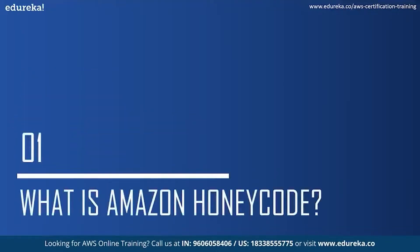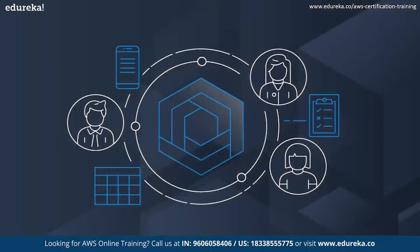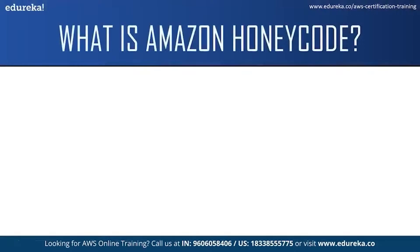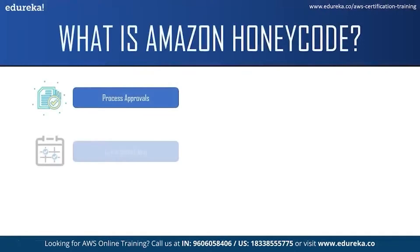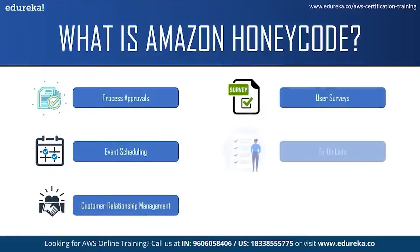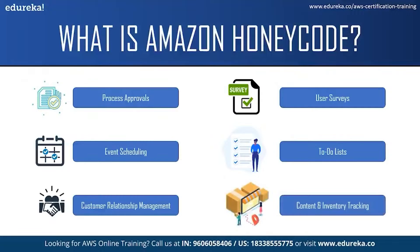Amazon Honeycode is a fully managed service that allows individuals to quickly build powerful mobile and web applications. It can be used by individuals who need applications to track and manage things like process approvals, event scheduling, customer relationship management, user surveys, or it can be as simple as making a to-do list or even content and inventory tracking. This service is right for them because they no longer have to rely on error-prone methods like emailing spreadsheets or hiring developers to build costly custom applications.